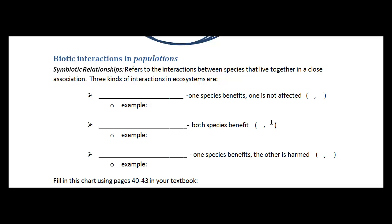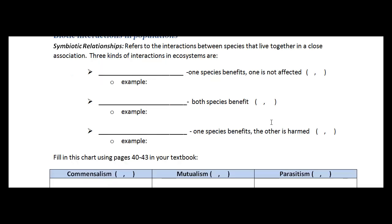So let's move on to biotic interactions within populations. So we have something called symbiotic relationships. And a symbiotic relationship just means that there are species that live together in a close proximity and they interact with each other. And so there's three different ways that they can interact. The interaction can be termed commensalism, which is where one species benefits and one is not affected. And we can represent that by one species has a positive effect from the relationship and one has no effect from the relationship. And an example of this would be barnacles on a whale.